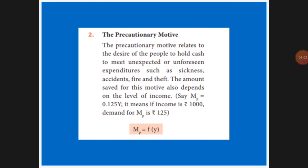Next is precautionary motive. Precautionary motive means if anything unexpected happens, you keep money for that. Maybe in your business a fire, accident, or theft could happen. Or if your family members suddenly fall sick, you have to keep money for that. That is called precautionary motive. The formula is: MP equals f(Y) — MP stands for precautionary motive, and it is also a function of income.